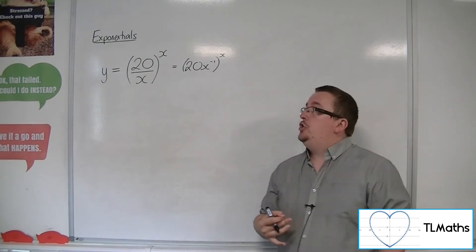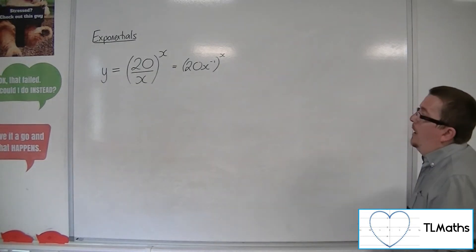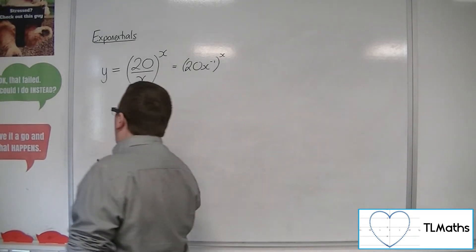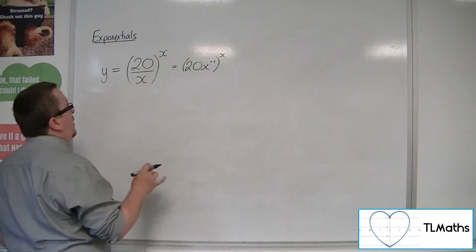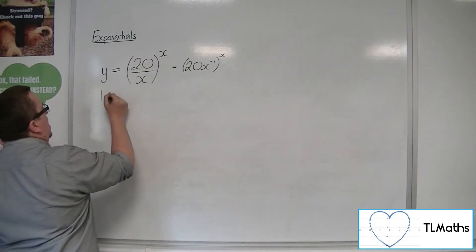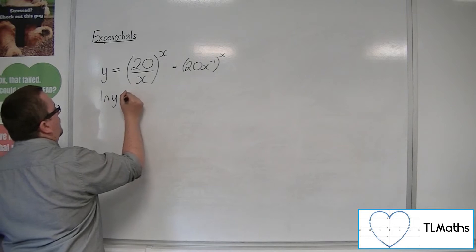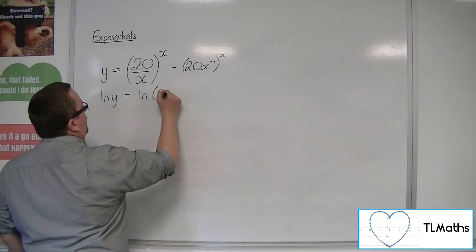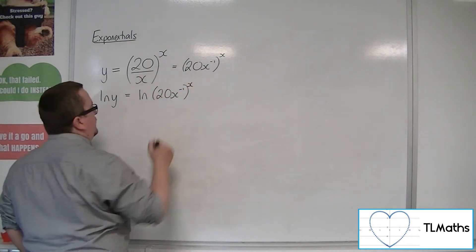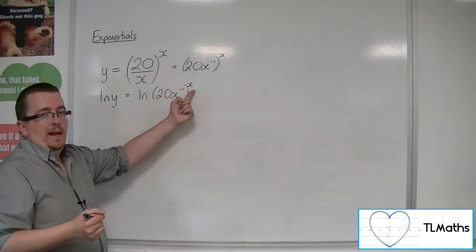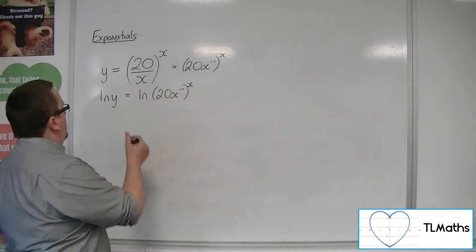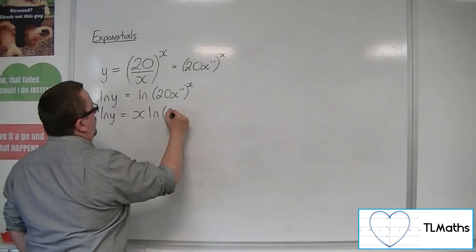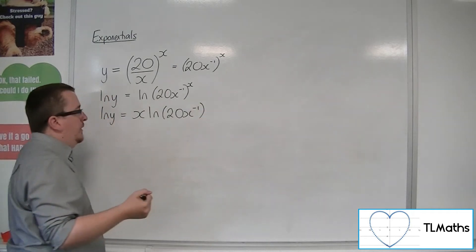Now to go ahead and differentiate that, we've got the problem because we've got the x in the exponent. So we want to get rid of that. So the best way to do that is to log both sides first. So we're going to bring in natural log of ln y. So natural log of y is equal to the natural log of 20x to the minus 1 to the x. Now because we've got the x in the power here, the x can be brought down to the front. So ln y is equal to x ln of 20x to the minus 1.